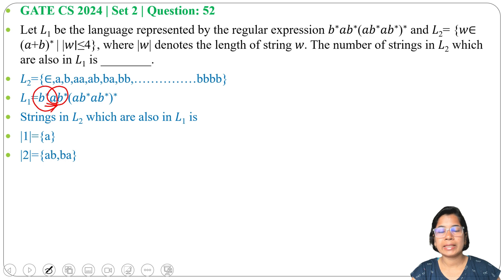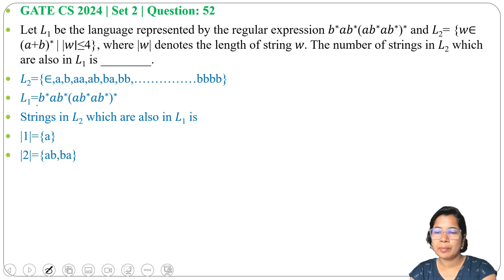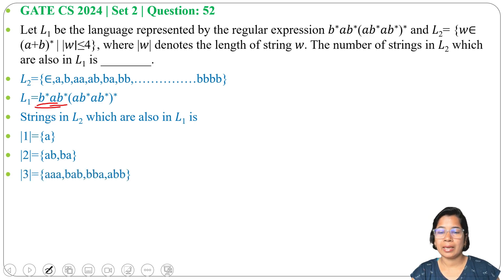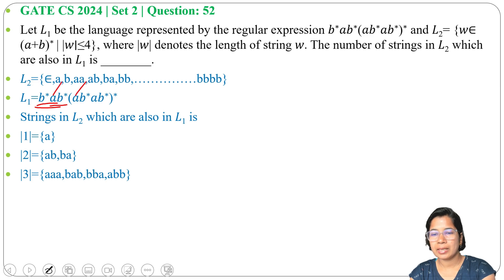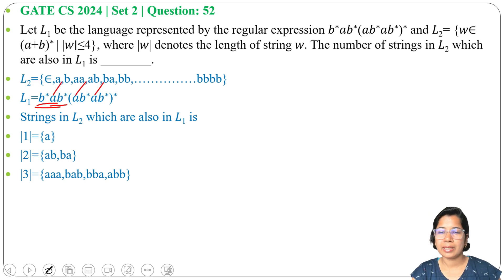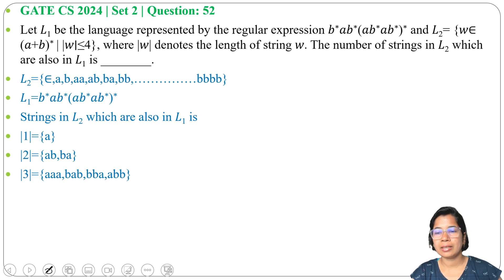For length 3, the strings in both L1 and L2 are: BBA, ABB, BBA, BAB — and also AAA (3 A's), which can be generated since A is the minimum string of L1. So there are a total of 4 strings of length 3 in L2 that are also in L1.